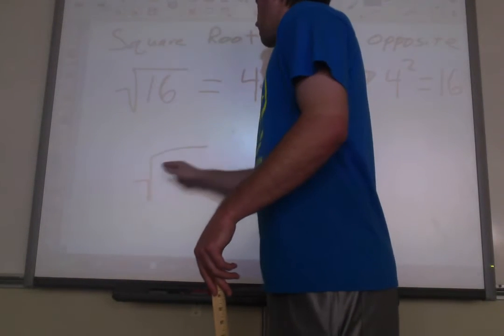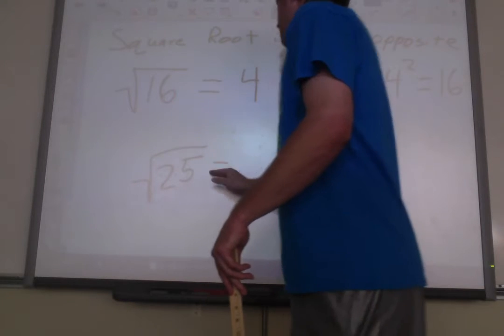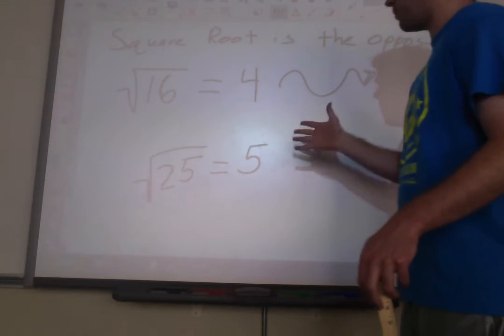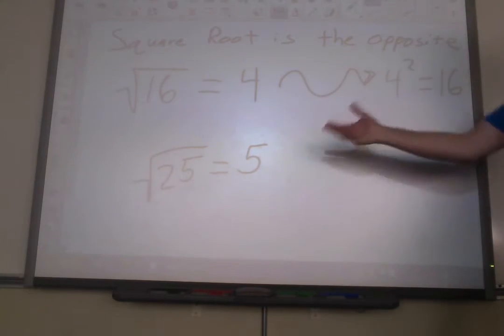If we took the square root of 25, again, we're asking what number could we multiply times itself to equal 25? The answer is 5, because 5 times 5, 5 times itself, equals 25.